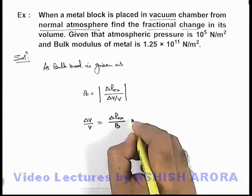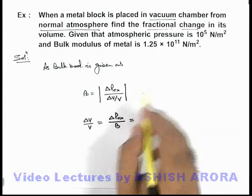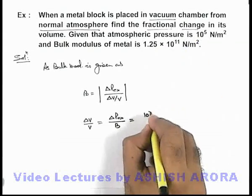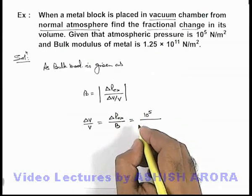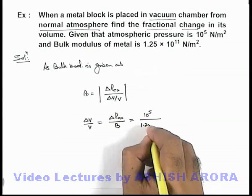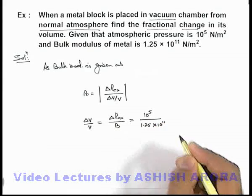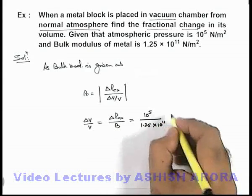The excess pressure which was removed was 10 to the power 5 newton per meter square, and bulk modulus given to us is 1.25 into 10 to the power 11. On simplifying, we get the result as 8 into 10 to the power minus 7.